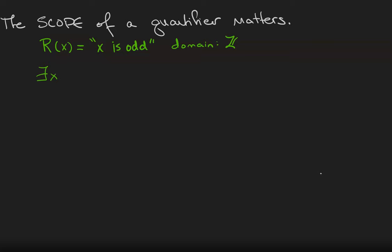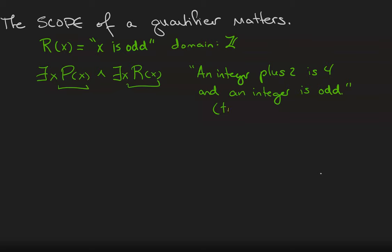If I write there exists an x such that P(x) and there exists an x such that R(x), each of these existential quantifiers is only referring to the predicate immediately in front of it. Without parentheses we assume that a quantifier is only applying to the predicate that's right next to it. So this statement says an integer plus 2 is 4 and an integer, not necessarily the same one, is odd. And that statement is definitely true. There is an integer that plus 2 makes 4 and there is an integer that is odd.